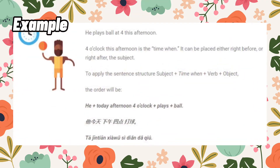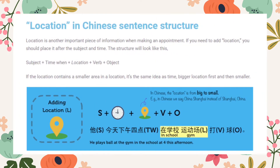For example: 'he plays ball at 4 this afternoon.' The time when can be placed either right before or right after the subject. Applying the structure — subject plus time when plus verb plus object — the order will be: he plus today afternoon four o'clock plus plays plus ball. The Chinese sentence will be: ta, chintian, shau si tian, da, chou.